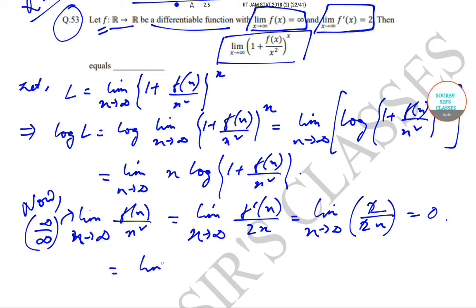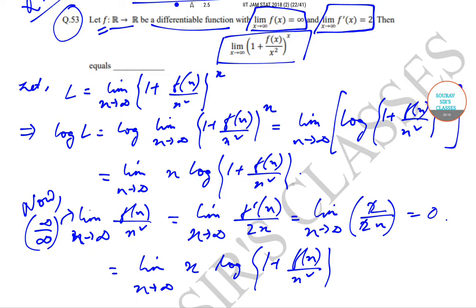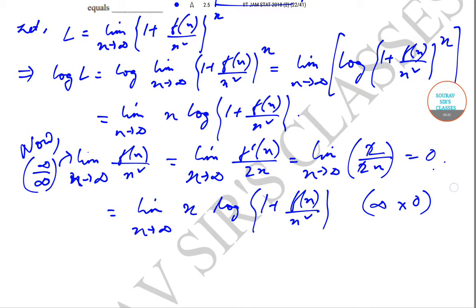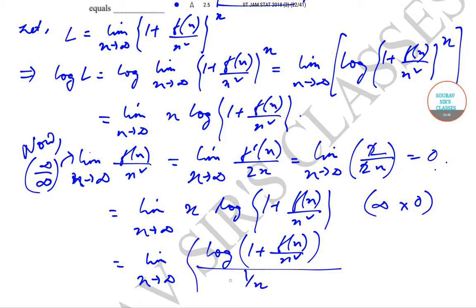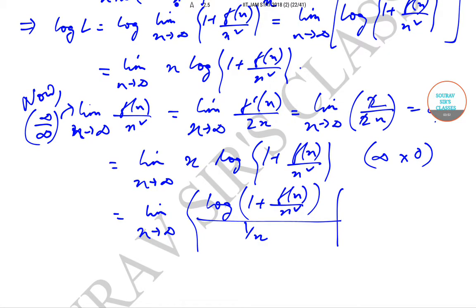So we return to the limit as x tends to infinity of x·log(1 + f(x)/x²). Since f(x)/x² equals 0, we get log(1 + 0) = log(1) = 0, giving us an infinity times 0 format. We move 1/x to the denominator, writing the expression as log(1 + f(x)/x²) divided by (1/x). Now log(1 + 0) = 0, so this is a 0/0 form, and we apply L'Hôpital's rule.